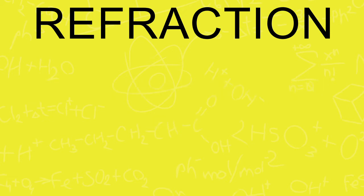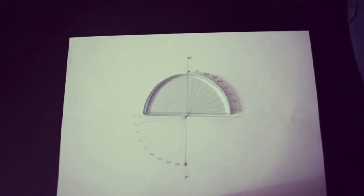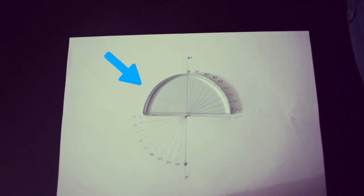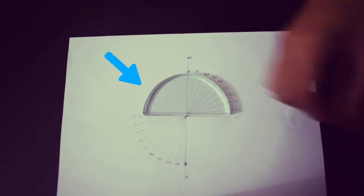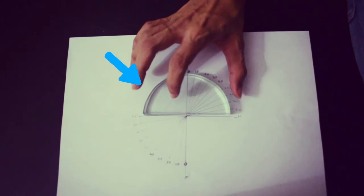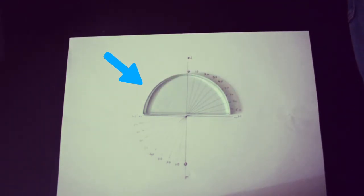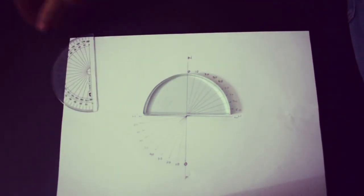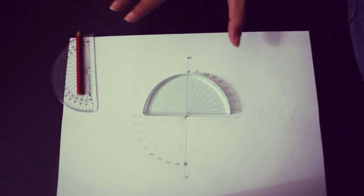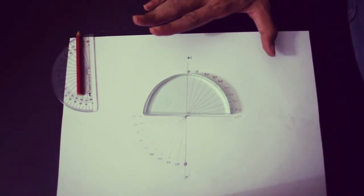For this activity I need a medium of change — I will be using glass, which is a transparent medium that light will pass through. Specifically, I will be using a semi-circular glass slab, along with some drawing equipment like a protractor, pencil, and scale.